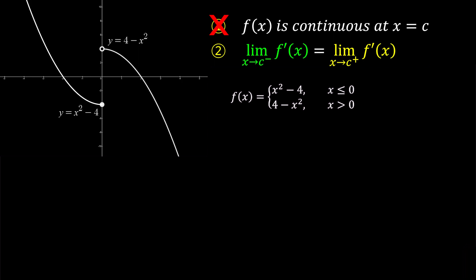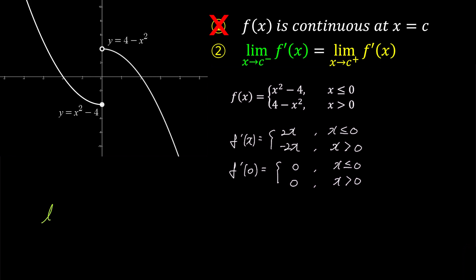Now let's consider the second condition. To verify it, let's differentiate f of x. For x less than or equal to 0, f prime becomes 2x, and for x greater than 0, it becomes negative 2x. When we substitute x equals 0, f prime of 0 becomes 0 for both cases. This means that as x approaches 0 from the left side, the slope becomes 0, and as x approaches 0 from the right side, the slope also becomes 0. Thus the second condition is satisfied. However, since the function is not continuous at 0, f of x is not differentiable at x equals 0.